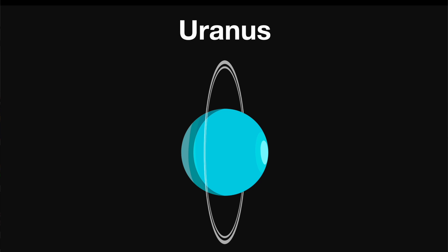Uranus is unique because of the way it spins on its side. It's the only planet that spins in this manner. Due to the way it orbits on its side, its seasons are different from those on Earth.